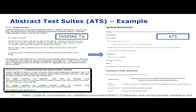As a practical example: on the left is a piece of the metadata technical guidance TG 2.0 with a requirement describing what the spatial resolution element should be. On the right is the corresponding ATS on GitHub — a high-level description of how the test for that specific requirement should be performed.